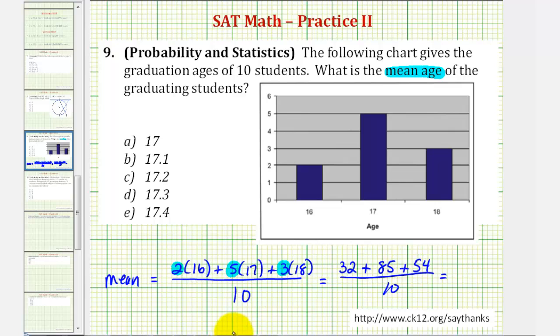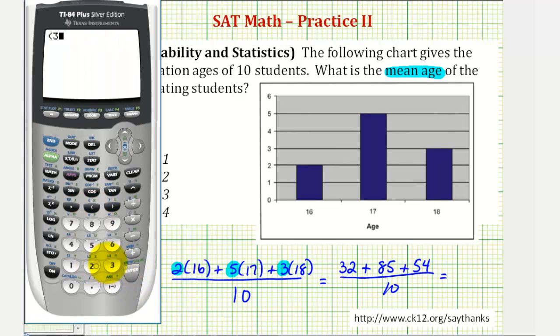Now let's go to the calculator. We have thirty-two plus eighty-five plus fifty-four in parentheses, and we'll divide this by ten. So the average age or the mean age is seventeen point one.